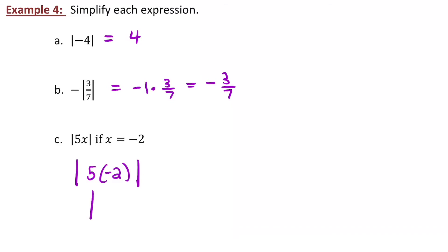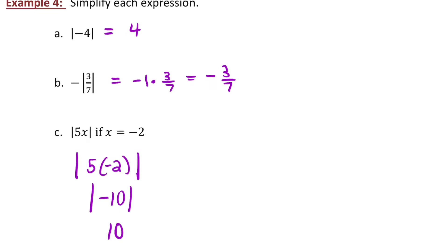On C, we're going to replace our variable with negative 2, and then working inside that grouping symbol, we'll get negative 10. And then the absolute value of negative 10 is 10.